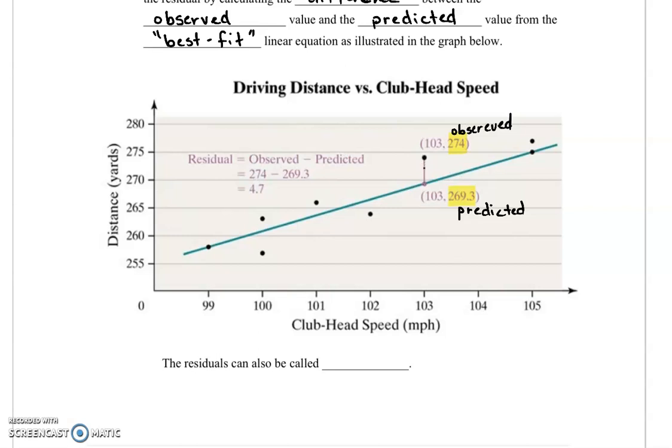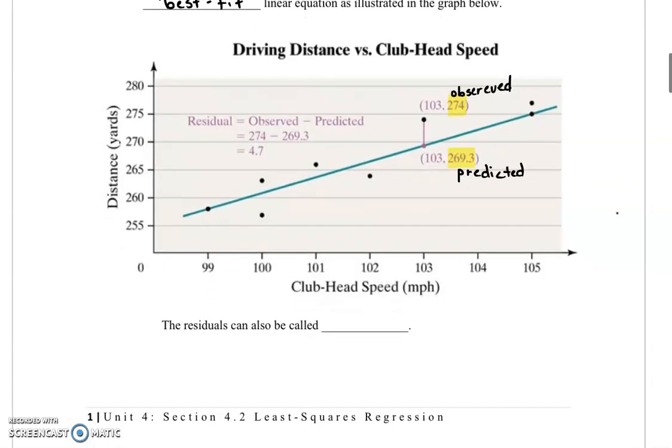This little line joining the two points has a length of 4.7. The object is to find the line so that we're minimizing how far off the line every data point is. Residuals can also sometimes be called errors.